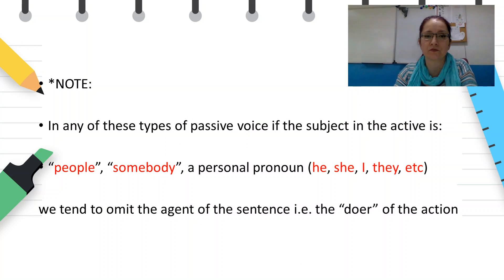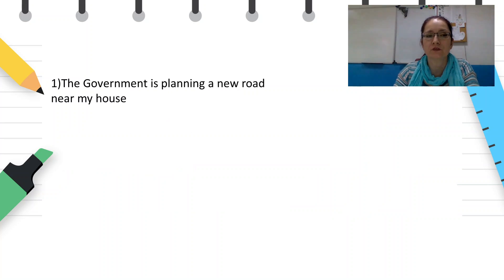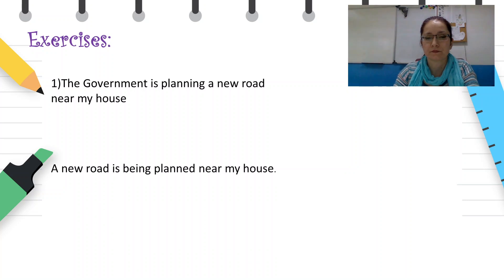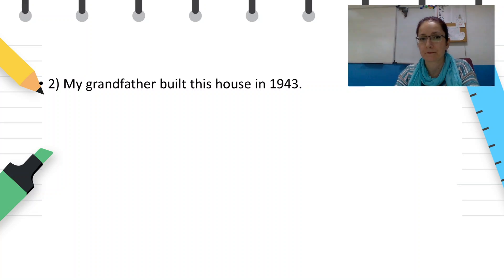In any of these types of passive voice, if the subject in the passive is 'people', 'somebody', or a personal pronoun like 'he', 'she', 'I', 'they', 'we', we tend to omit the agent. Let's try together. 'The government is planning a new road near my house' → 'A new road is being planned near my house.' 'My grandfather built this house in 1943' → 'This house was built in 1943 by my grandfather.'